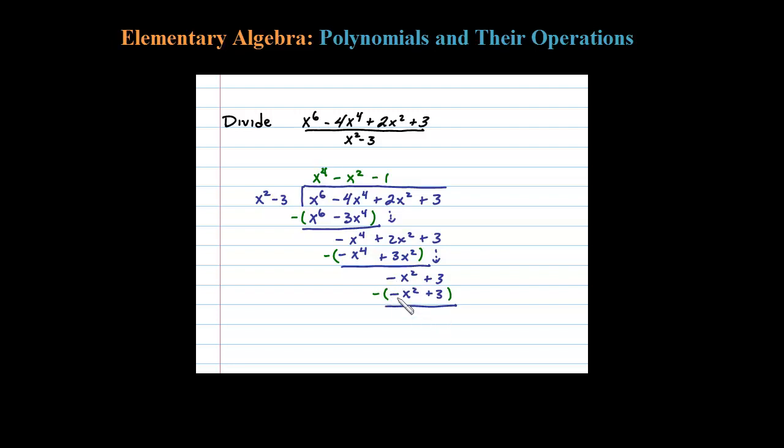So that polynomial went in evenly and the result is X to the fourth minus X squared minus 1.